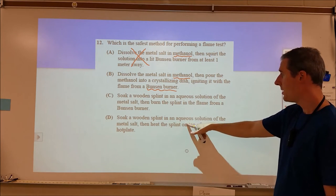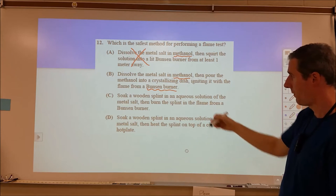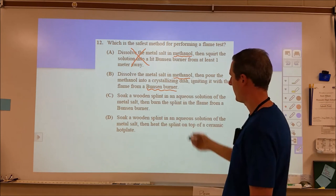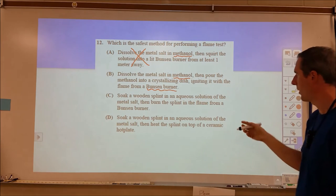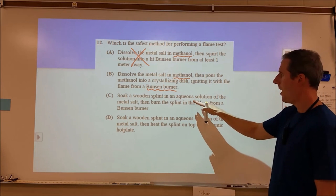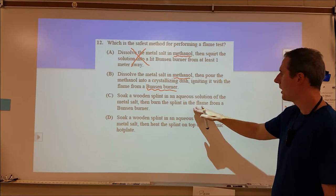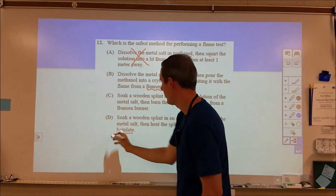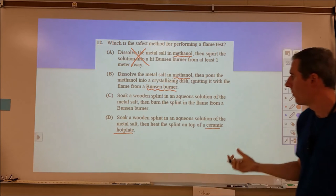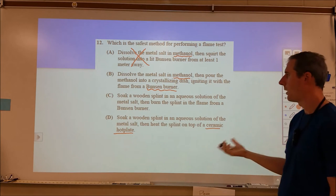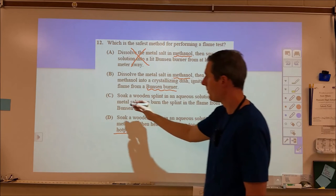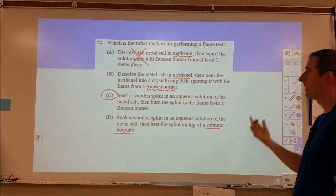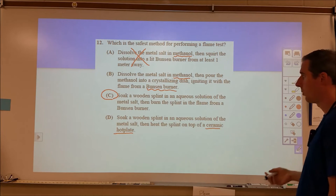And then C and D, we're looking at a wooden splint instead of a methanol solution. So that's going to be safer because we lose that explosion risk, barring really weird circumstances. And in the one, we're heating it up in a Bunsen burner. In the other one, we're heating it on a ceramic hot plate. This is not, I don't think that would work at all. And if it did, it might light the thing on fire, which I guess is kind of the point. But what I want to see is your actual option that is safe and would work.